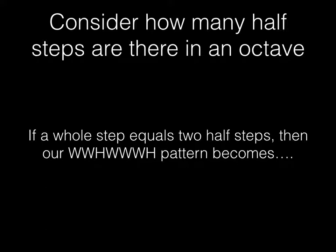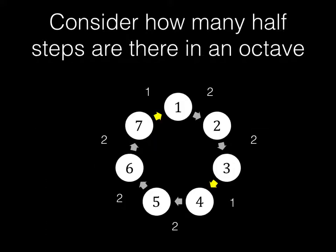So if a whole step equals two half steps, then our whole, whole, half, whole, whole, whole, half pattern will become something like this, where you go from scale degree 1 to 2 with two half steps, 2 to 3 with two half steps, and 3 to 4, what I placed in yellow there, is only one half step.